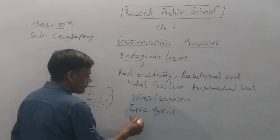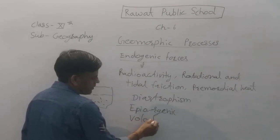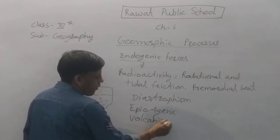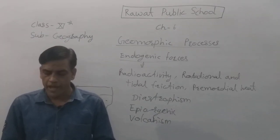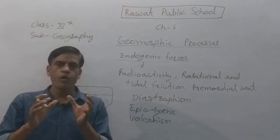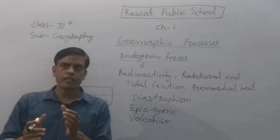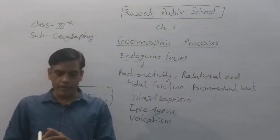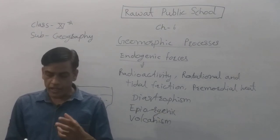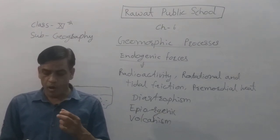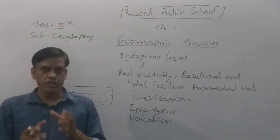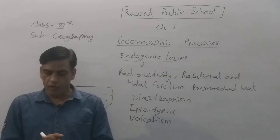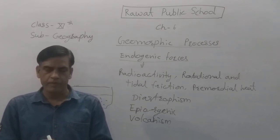Volcanism involves the movement of magma towards the surface of the earth. The molten material present in the earth's crust or mantle — the magma — leads to the formation of several intrusive and extrusive volcanic forms. Volcanoes and volcanic formations have already been discussed in chapter 5.